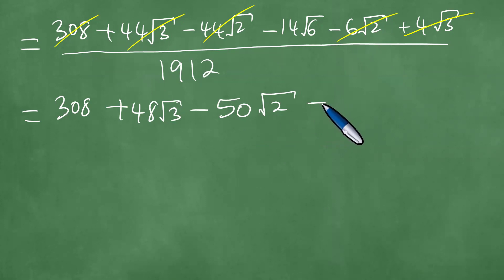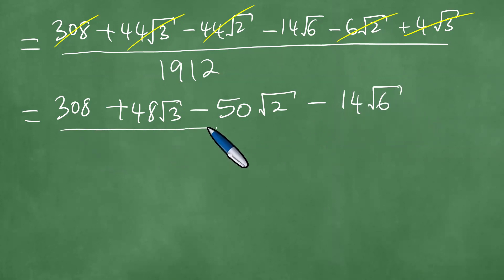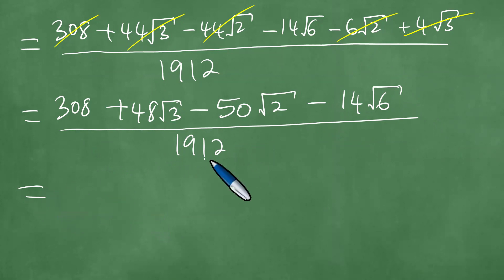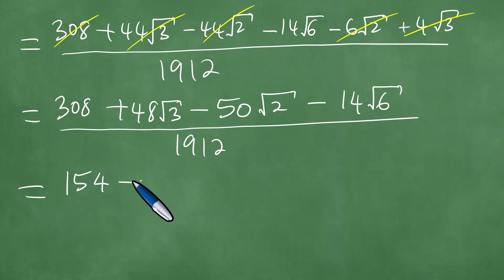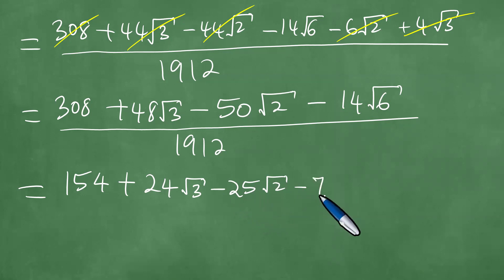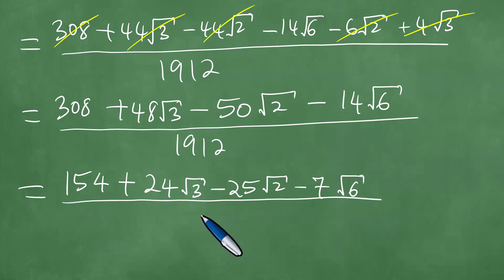This gives us 308, and combining square root of 3 terms: 44 plus 4 gives 48 times the square root of 3. For square root of 2 terms: minus 44 minus 6 gives minus 50 times the square root of 2. Then minus 14 times the square root of 6, divided by 1912. Divide through by 2: 154 plus 24 times the square root of 3, minus 25 times the square root of 2, minus 7 times the square root of 6, divided by 956.